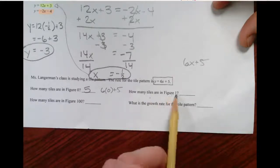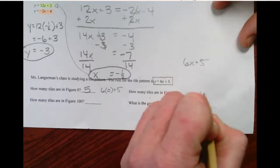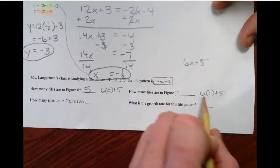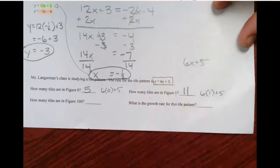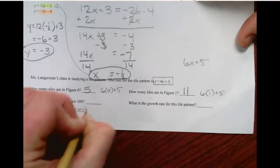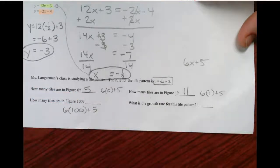How many tiles are in figure 1? Well, now we have 6 times 1 plus 5. 6 plus 5. That's 11. How many tiles are in figure 100? 6 times 100 plus 5. That's 605.